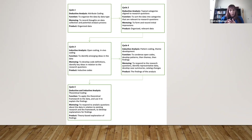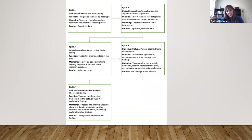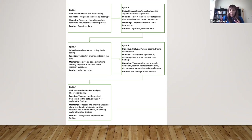A third type of memo involves pulling key pieces of data — evidentiary support for the findings I've developed. If I'm seeing especially important quotes or especially relevant or interesting data, I'll pull those into a memo and do some analytic work around what they mean, how I would write about them, and how I would incorporate them into the write-up for each of these findings. So those are three important types of memos that fit within these cycles.